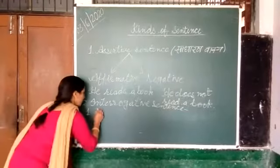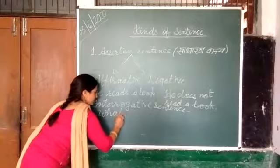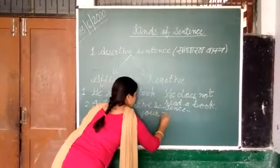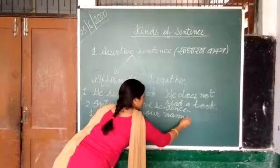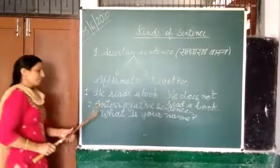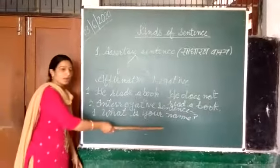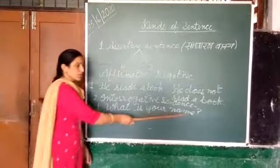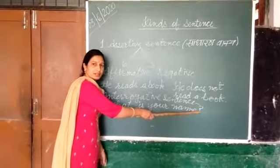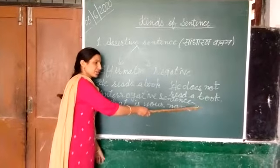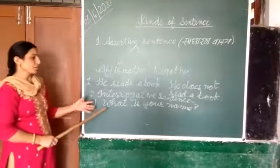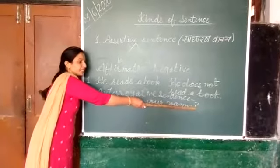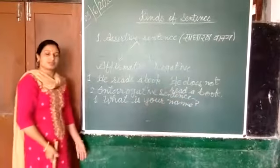Example है: What is your name? आपका क्या नाम है? जब मैंने ये sentence लिखा, तो इसके end में क्या लगा है? Question mark. तो जब भी कोई Interrogative Sentence लिखा जाता है, तो उसके अंत में प्रशन वाचक चिह्न लगाया जाता है.